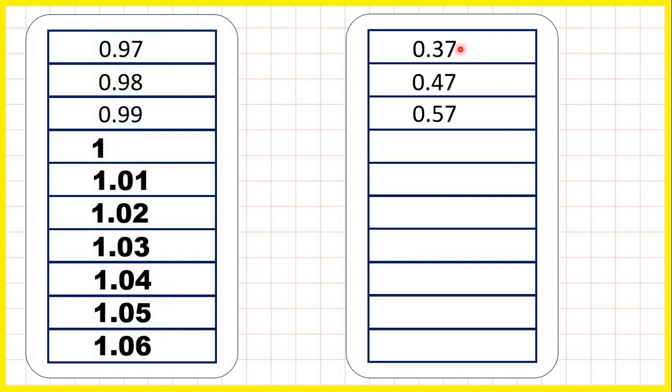0.37, 0.47, 0.57. What are the next seven numbers in this sequence?